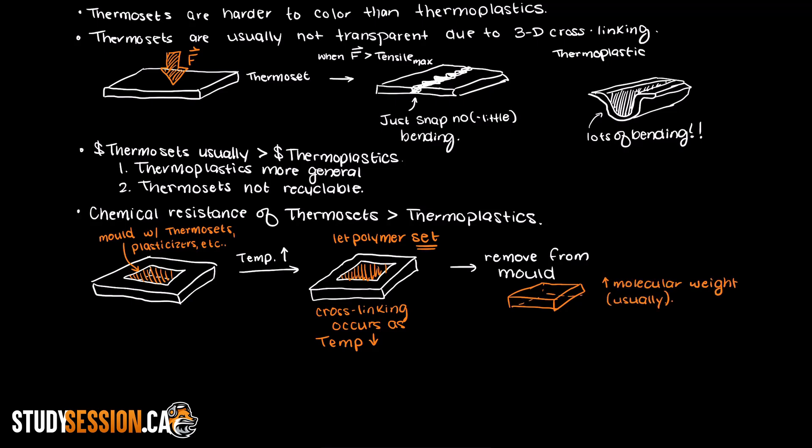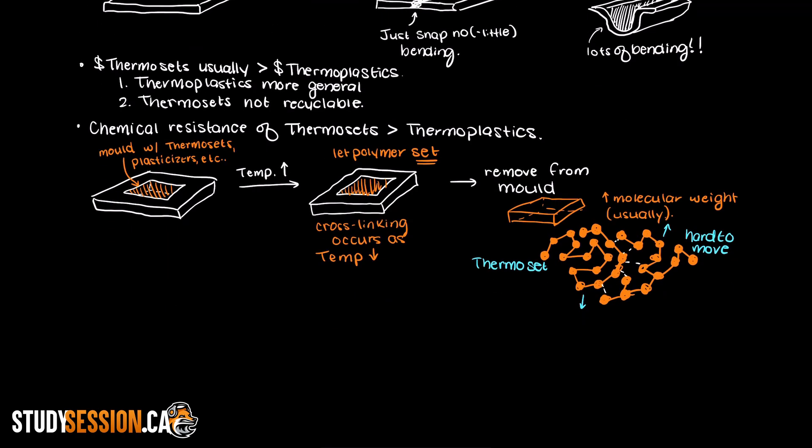Thermosets molecular mass generally becomes massive as the crosslinking between the polymers connects them all together. This causes the molecular weight of thermosets to be much larger than many thermoplastics. So if we had a massive macromolecule that is our thermoset polymer, they would have a hard time moving around as it is so large and interconnected into the 3D crosslinking lattice we previously talked about.